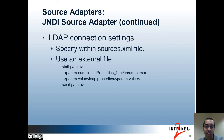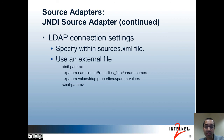In Grouper 2.1, the example-sources.xml file contains an example of specifying the connection settings in that file. If you want to use an external properties file, you would remove those settings and add the XML shown on this slide. You would then create an ldap.properties file with the appropriate settings. In the 2.1 API tarball, there is not an example of the ldap.properties file, but you can get an example from the PSP tarball.